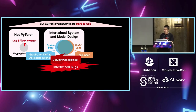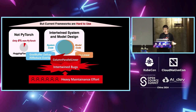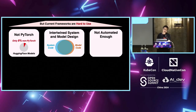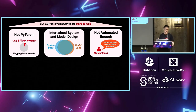The same problem exists the other way around: if you are a systems person trying to improve the MFU, you need to change code and can easily touch model code, which could lead to intertwined bugs. As a result, we need a lot of human effort to maintain the code. The third challenge is that most existing frameworks are not automatic enough — you need a lot of human effort to figure out how to do TP, how to do PP, how to cut the PP stage, and so on. That adds extra cost to our development.